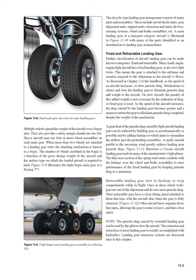As the speed of an aircraft increases, so does parasite drag. Mechanisms to retract and stow the landing gear to eliminate parasite drag add weight. On slow aircraft, the penalty of this added weight is not overcome by the reduction of drag, so fixed gear is used. As speed increases, the drag caused by landing gear becomes greater, and a means to retract the gear is required despite the weight of the mechanism. A great deal of parasite drag caused by light aircraft landing gear can be reduced by building gear as aerodynamically as possible and by adding fairings or wheel pants to streamline the airflow past the protruding assemblies.